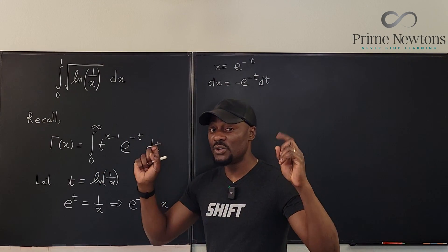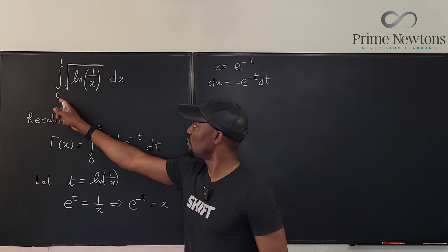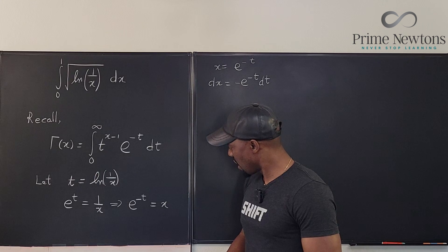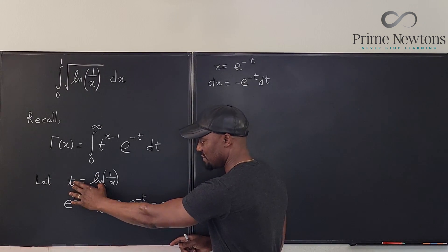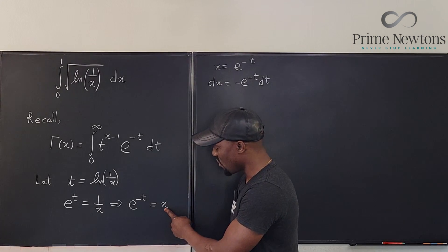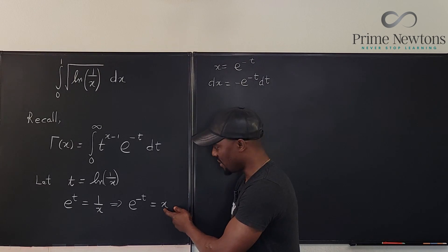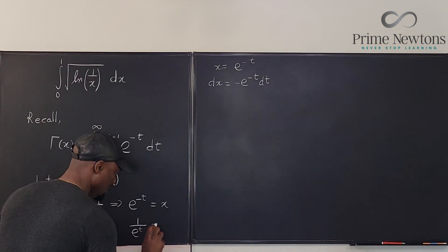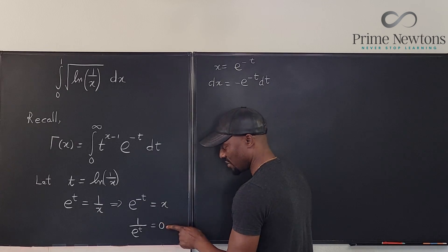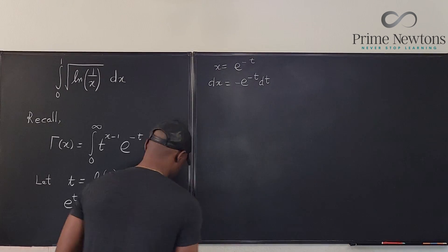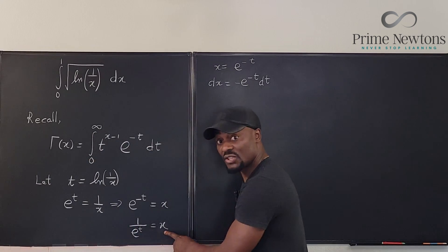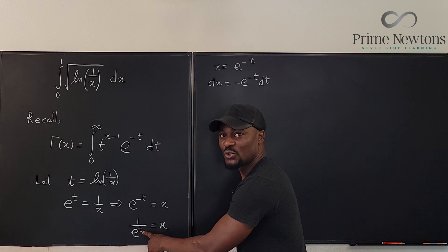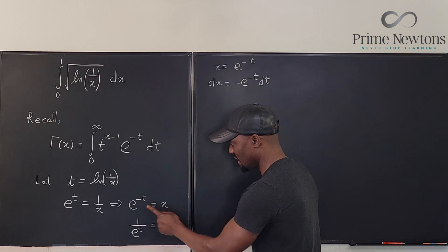Remember that every time you do a u substitution or change of variable it is important to also change the boundaries. So from here I can say when x is 0, when is it possible for an exponential function to be 0? Well this is 1 over e to the t. The only time this will be equal to 0 is if the denominator is infinity and that only happens when t is infinity. So we can say that x equals 0 when t is infinity.